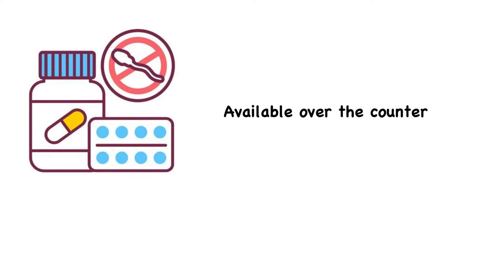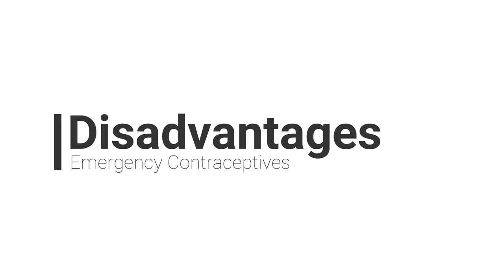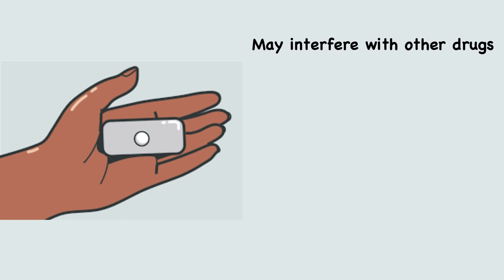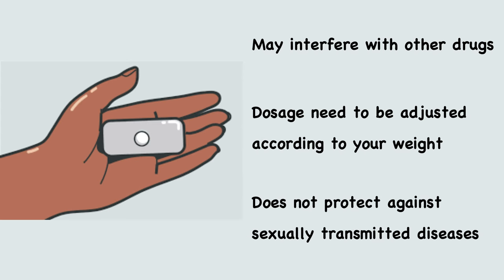The advantages of emergency contraceptives are that they are available over the counter and work retrospectively — that is, they prevent pregnancy after unprotected sex. The disadvantages are that they may interfere with other drugs you are taking, dosage needs to be adjusted according to your weight, and they do not protect against sexually transmitted diseases.